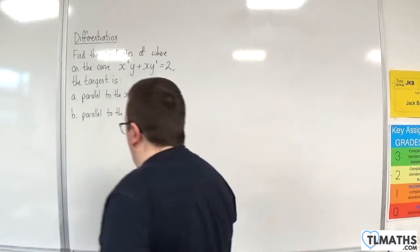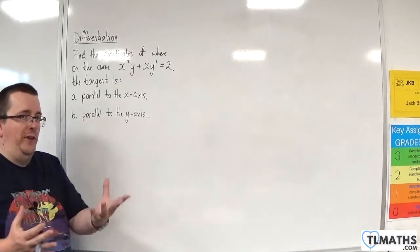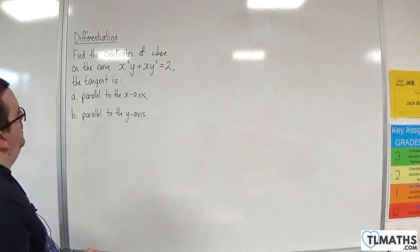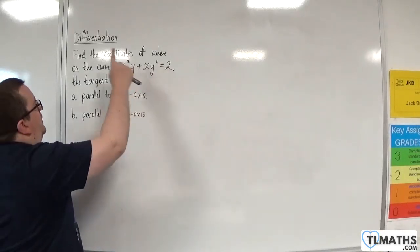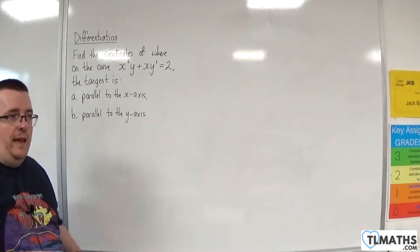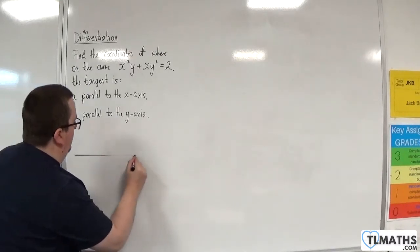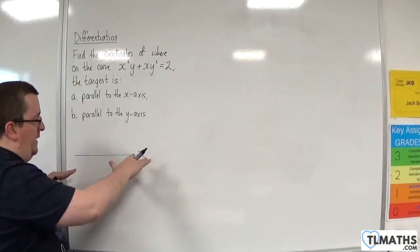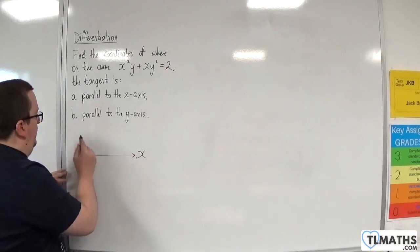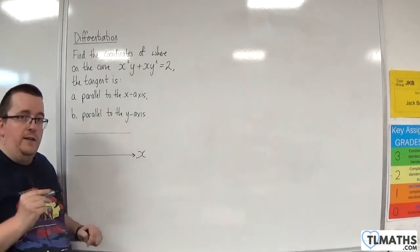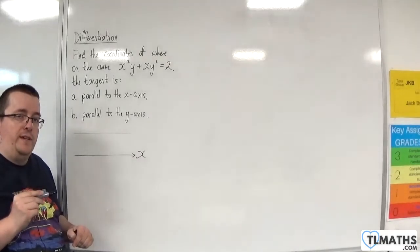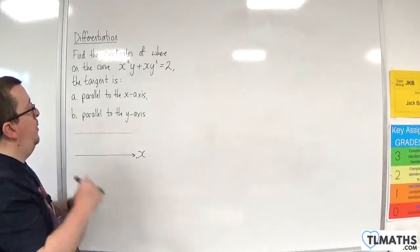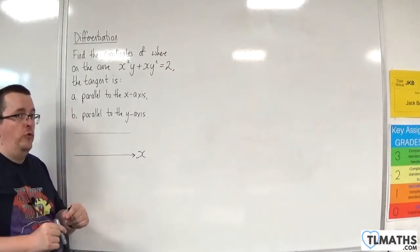Let's just make sure we understand what this question is actually asking. At some point for this curve, the tangent is parallel to the x-axis. The x-axis looks like that, of course. So if it is parallel to that, then that means that the gradient of that tangent is 0, in which case the point in question is a stationary point.